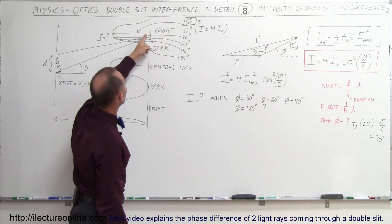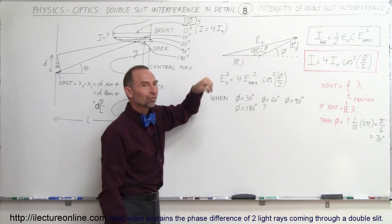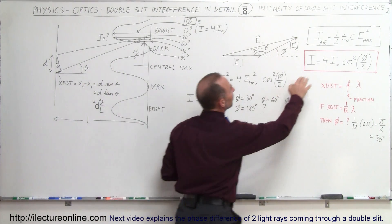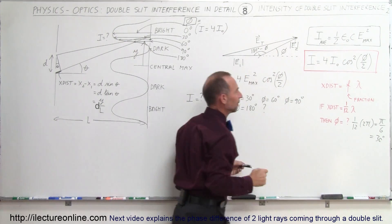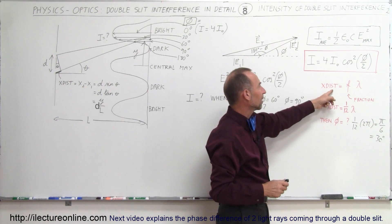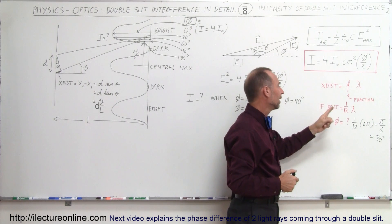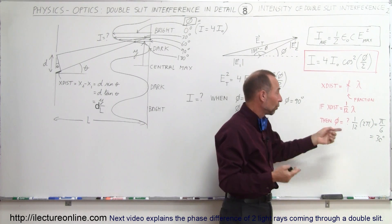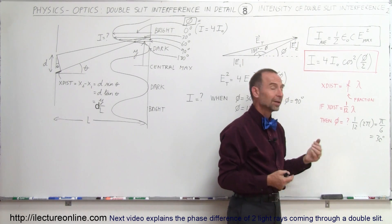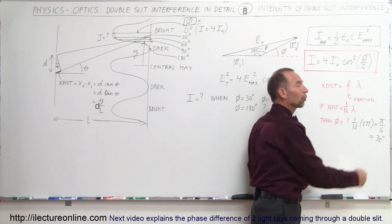If the phase difference is zero, we see a bright spot and the intensity is four times the intensity of each individual beam. Also, the phase difference can be found by how large the extra distance traveled is as a fraction of a wavelength. For example, if it's one twelfth of a wavelength, then the phase difference will be one twelfth of 2π — or one twelfth of 360 degrees — giving a phase difference of π/6 or 30 degrees.